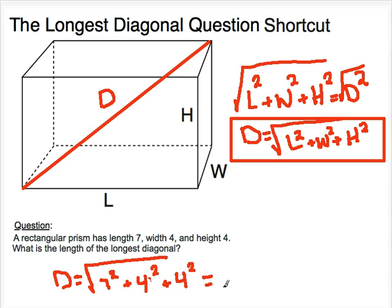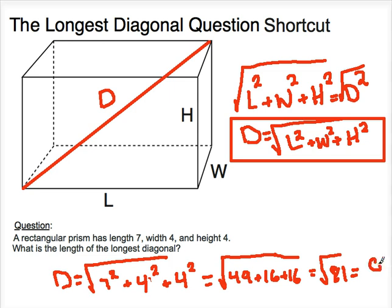Now from this point, all you have to do is evaluate these numbers. So square root, 7 squared is 49, 4 squared is 16, so plus 16. Another 4 squared is another 16. Now this gives us, add them all up, that's going to give us 81. And the square root of 81 is 9.